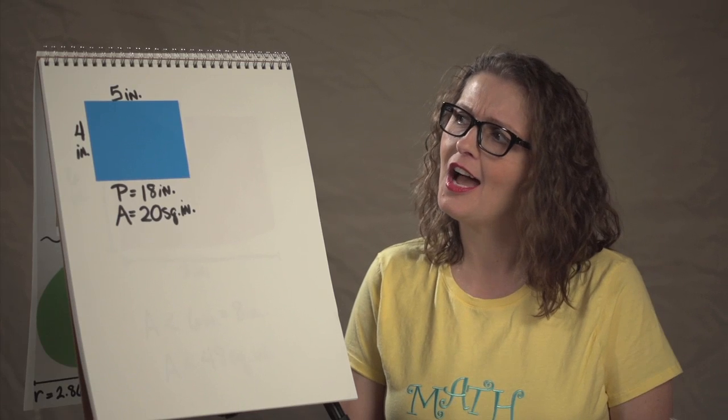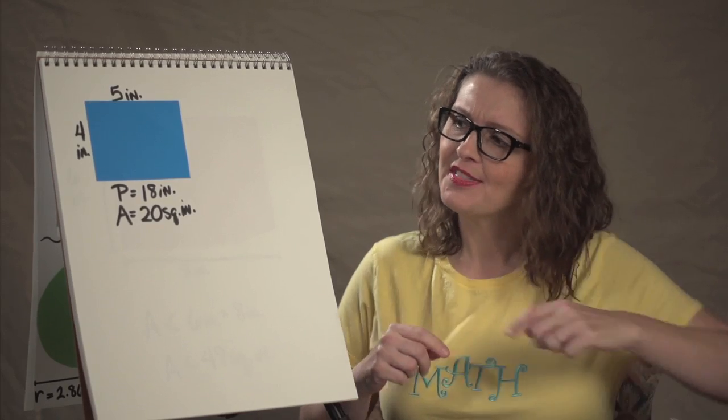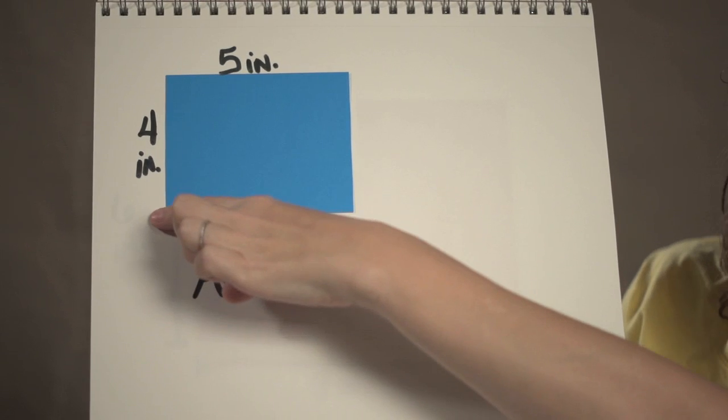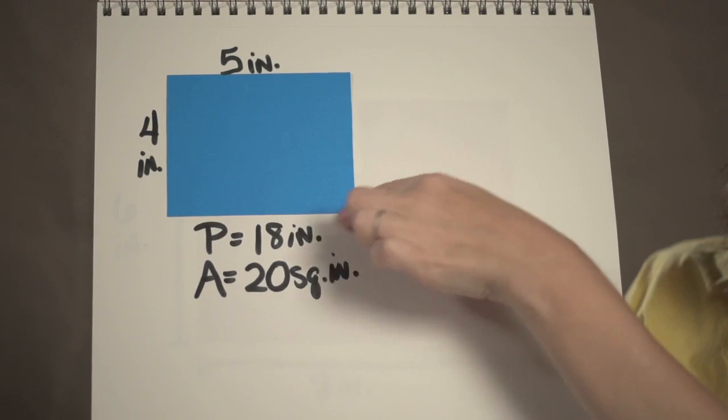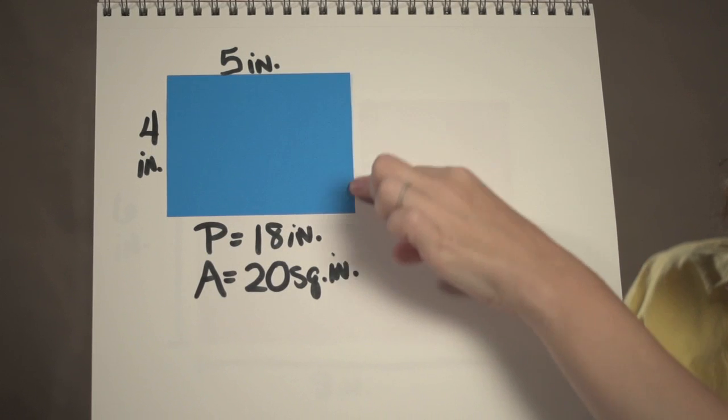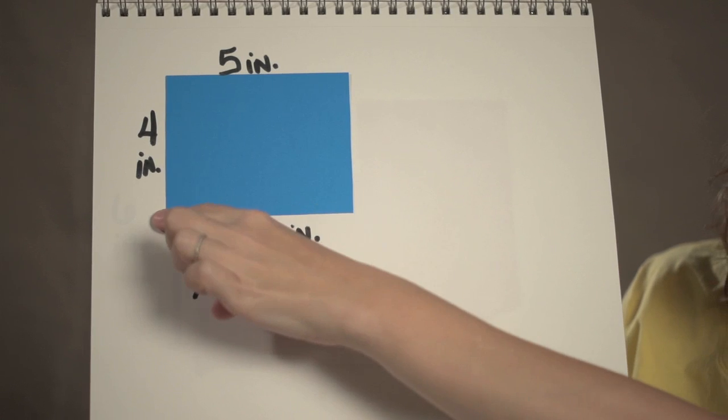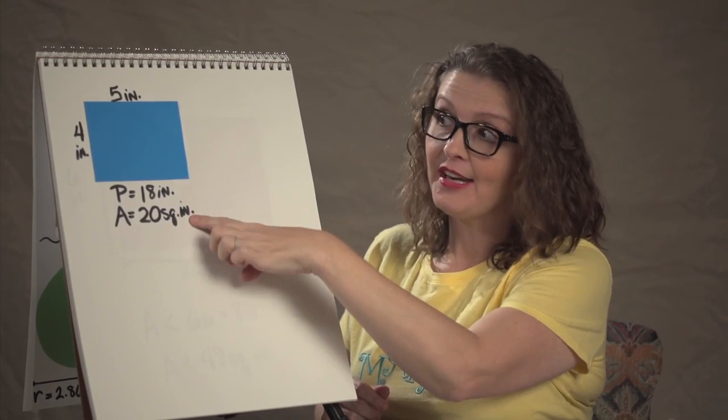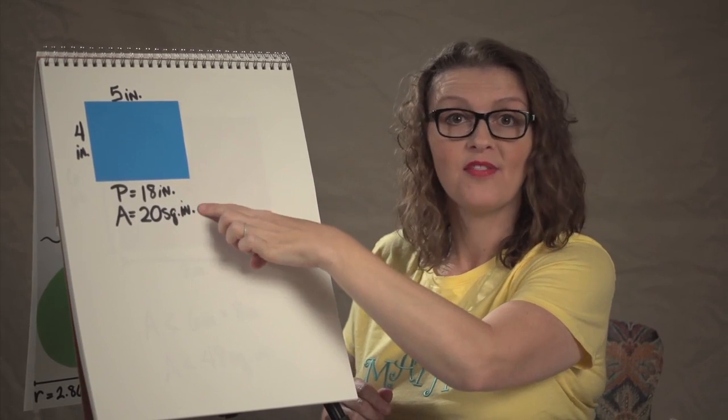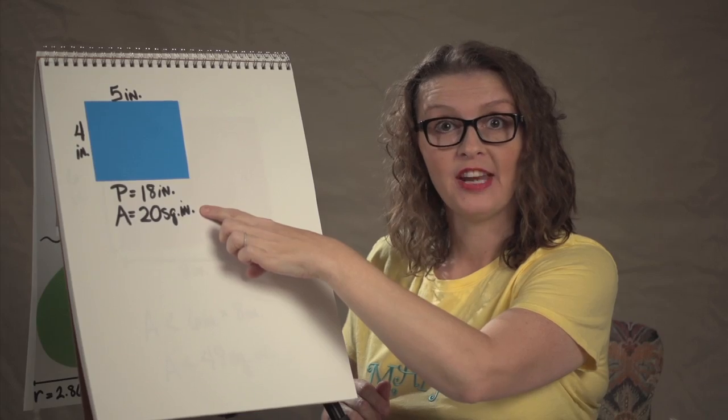I have here a rectangle that has the perimeter 18 inches. The perimeter means the area around. So we have 4 inches plus 5 inches plus another 4 inches plus this 5 inches is the 18 inches of perimeter. To find the area, which is the space inside, we multiply 4 times 5, so we have 20 square inches of area.